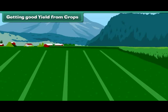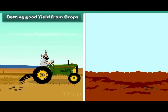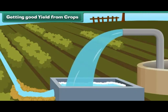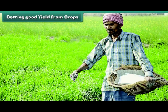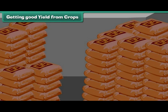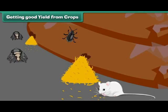Getting good yield from crops: to get a good yield from crops, the following things should be kept in mind. Healthy seeds of the best variety should be used. Before sowing, soil should be prepared by plowing and adding manure or fertilizers. Soil should be watered at the right time and with the right amount of water. Crops should be protected from diseases, harmful insects and animals. Insecticides and pesticides should be sprayed in correct quantities. Crops should be protected from grazing animals. Harvested crops should be stored properly to protect from moisture, as moisture causes growth of fungi and bacteria. Crops should also be protected from rats, insects and other animals.